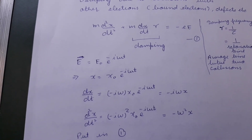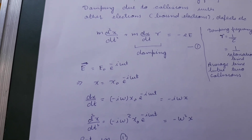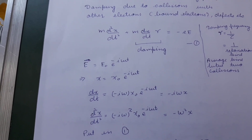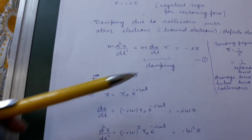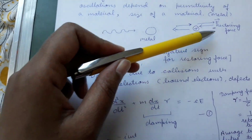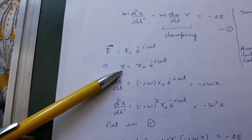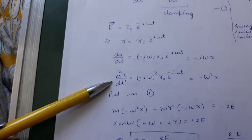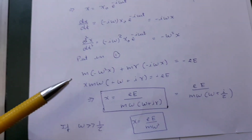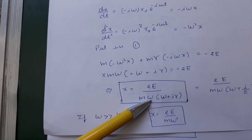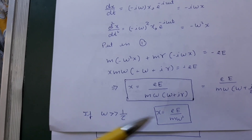Gamma is the inverse of the relaxation time. The relaxation time is the average time an electron spends between two collisions — you can check the Drude model for metals for more detail. If the electric field is oscillating, the displacement of the electron will also be oscillating. Taking first and second derivatives and substituting into the equation, we get the displacement, which depends upon gamma, the incident frequency, and the electric field. If the frequency is much greater than the damping frequency, x simplifies accordingly.